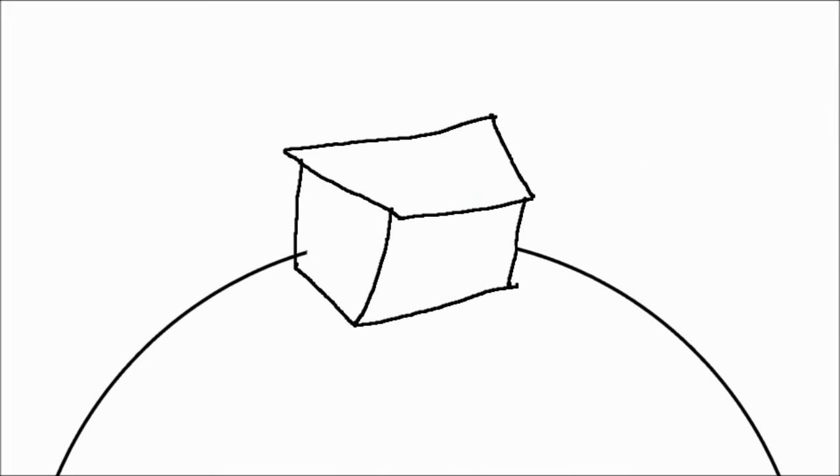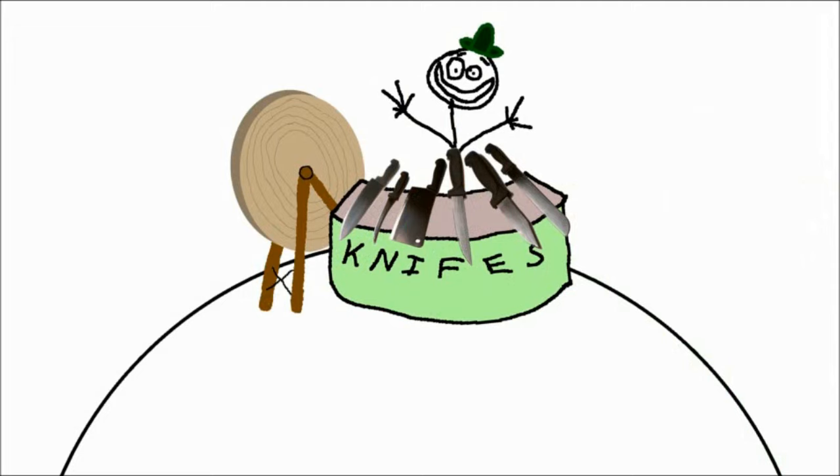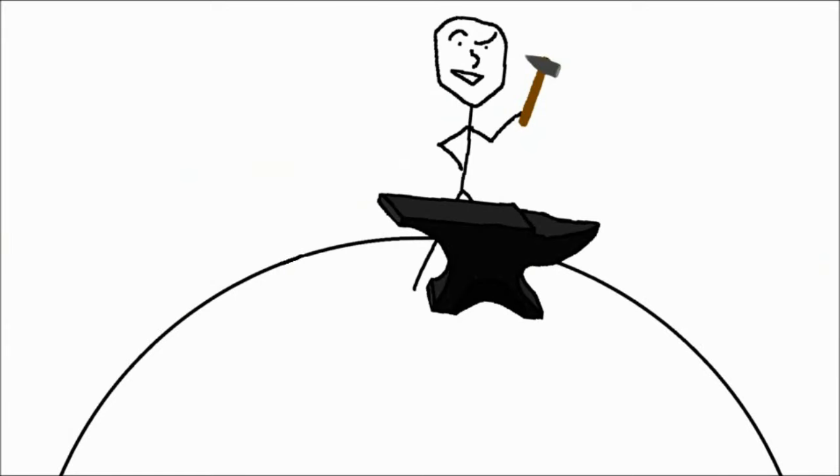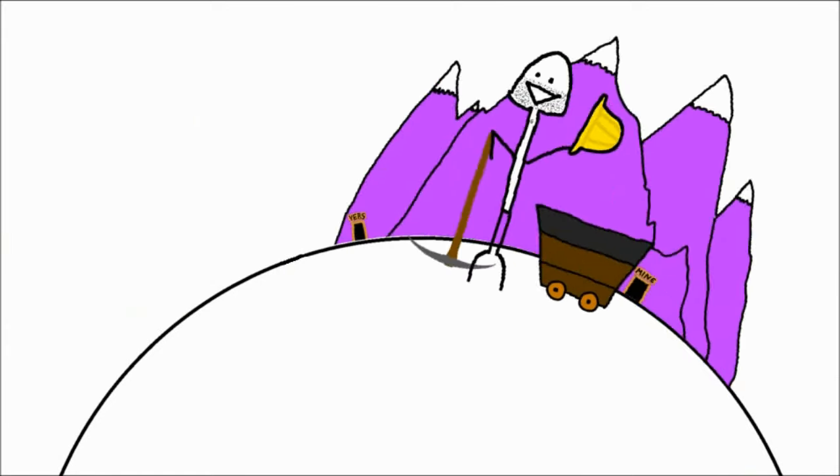Let's start with a simple economy. Suppose there's a village of five people: a butcher, a cutler, a stonemason, a blacksmith, and a miner.